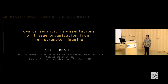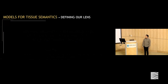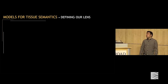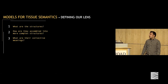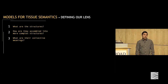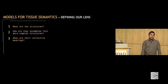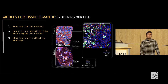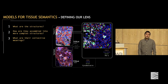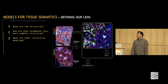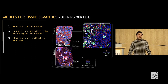I'm going to be talking today a lot about models for tissue semantics. So what do I mean by this? There are three questions that arise when you look at tissues in whichever modality, but particularly in imaging data. The first question is: what are the basic structures of our tissues?